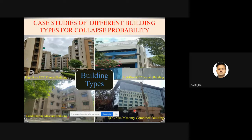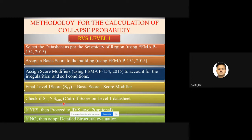As per FEMA P-154 (2015), there are 17 different building types based on material and type of construction. In this study, four types prevalent in Delhi NCR were considered: high-rise RCC frame building, mid-rise RCC frame building, RCC plus masonry combined building, and load-bearing masonry building. The RVS methodology is a two-stage method: Level 1 RVS and Level 2 RVS. Level 2 is more detailed and requires greater expertise; its score can be higher than Level 1 due to more conservative score modifiers in Level 1.